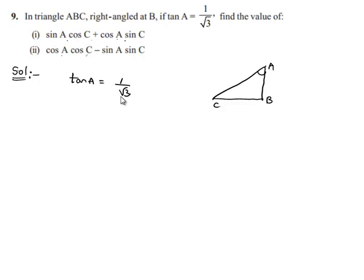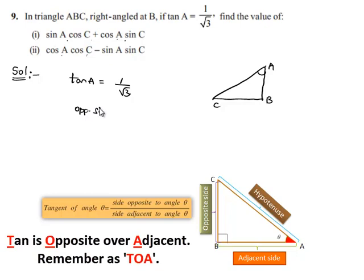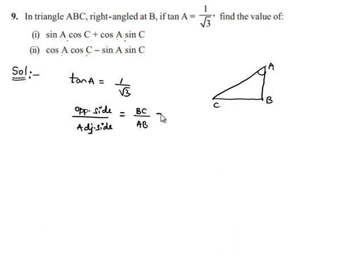In order to find the values of sin A, sin C, cos A, and cos C, we need to know the relation between sides AB, BC, and AC. Since tan A is equal to 1 by root 3, and tangent of an angle equals the ratio of its opposite side to its adjacent side, that is BC by AB equals 1 by root 3. So in the simplest ratio, BC is equal to 1 and AB is equal to root 3.